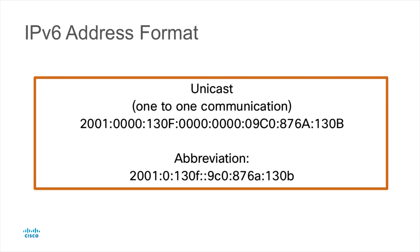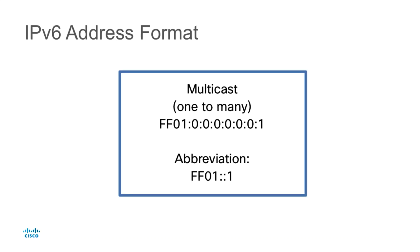We also have multicast addresses, which are used for one-to-many communication. A multicast address is represented starting with FF01 — for example, FF01:0:0:0:0:0:0:1. Using the double colon shortcut, this can be abbreviated to FF01::1, and IPv6 is smart enough to expand that correctly.